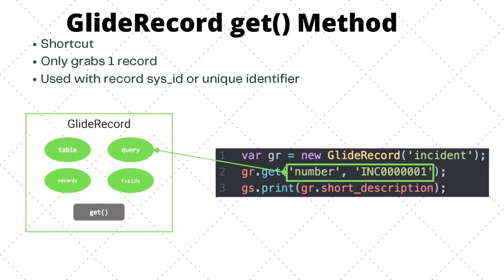Here we have three lines of code. On line one we provide the table name to the GlideRecord constructor as usual. On line two, instead of using addQuery or query, we use the get method, which takes the sys_id as an argument. Alternatively, we can pass a field name and field value as arguments. For example, because the number field is truly unique, we can pass 'number' as the first argument and the specific incident number — in this case INC0001 — as the second argument to retrieve that record.